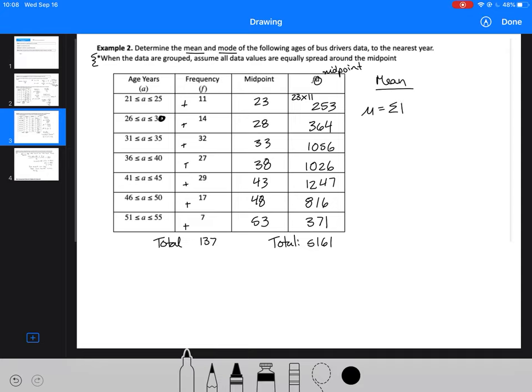So then we're going to look for our mean, which is the sum of our data values divided by the number of data values that we have. We found those already: 5161 divided by 137. So we find that our mean, our average bus driver age, is approximately 37.7.